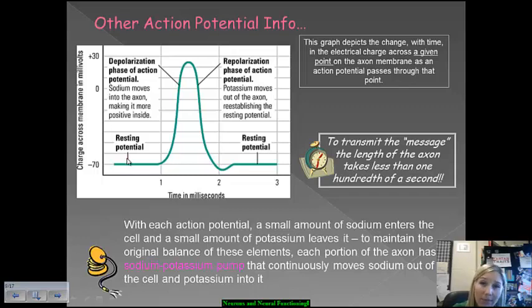If you think about the breakdown of the process of action potential within the axon, you have resting potential. So, this is when the sodium and the potassium ions are stable. And then, as we move through and establish the action potential process and we get to depolarization, this is when the sodium moves into the axon and makes it more positive on the inside to be able to fire the message.